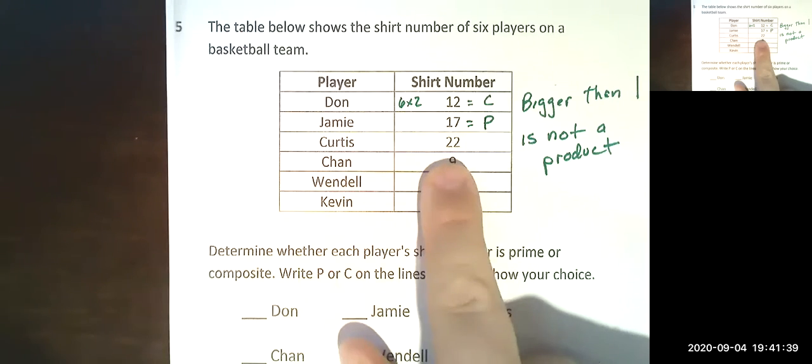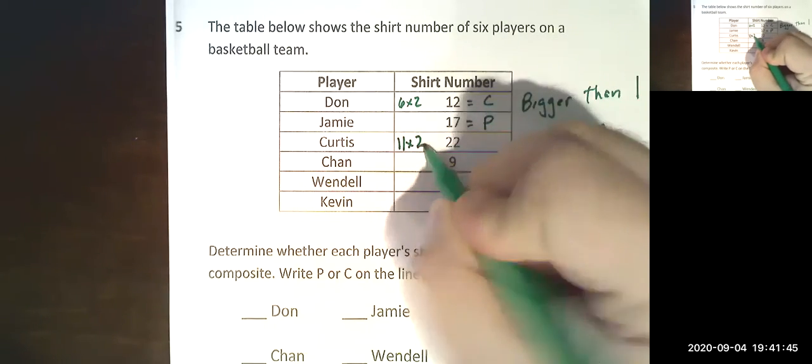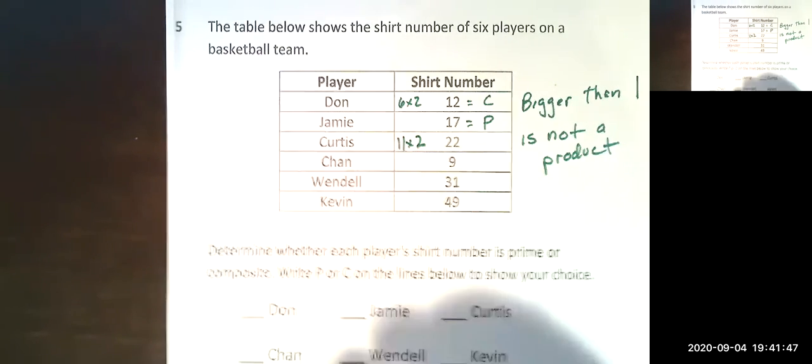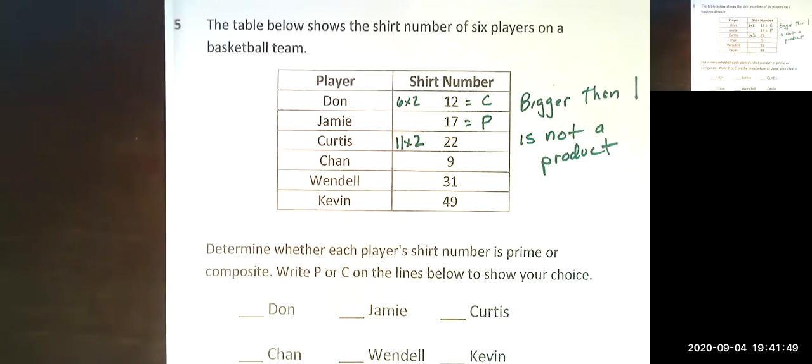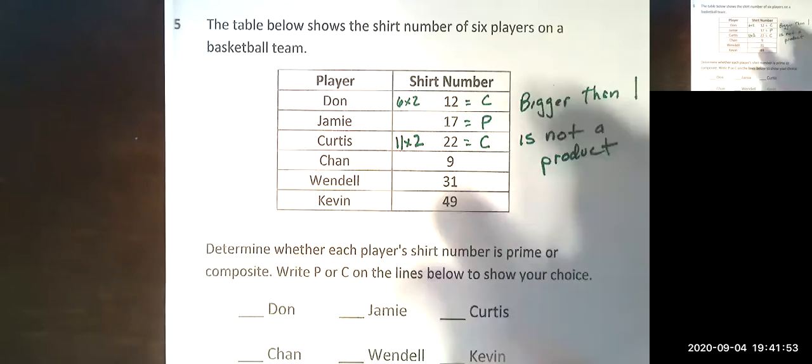Now 22, this is where it gets a little tricky. Think about it, isn't 11 times 2 equal to 22? The second you can multiply two numbers bigger than one together you know it's composite. You don't even have to think about it.